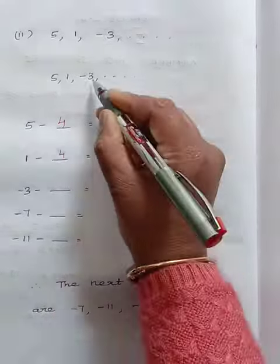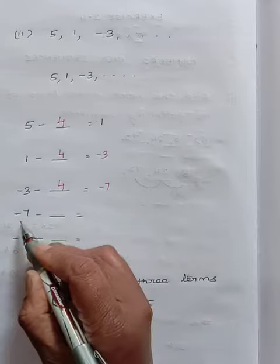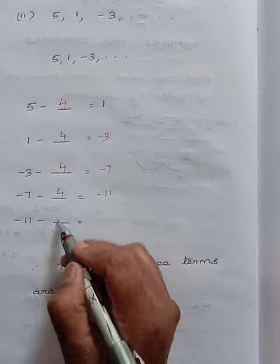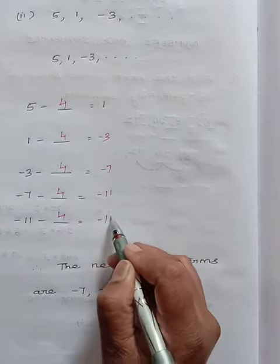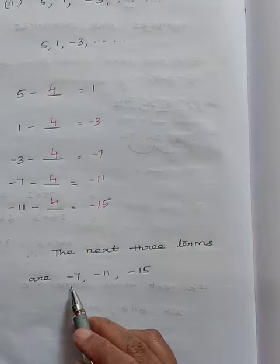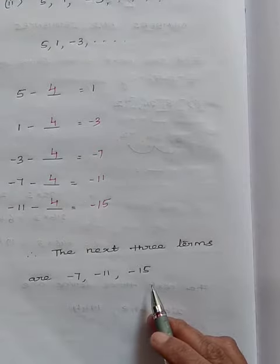Minus 3 minus 4, minus 7. Minus 7 minus 4, minus 11. Minus 11 minus 4, minus 15. Therefore the next 3 terms are minus 7, minus 11, and minus 15.